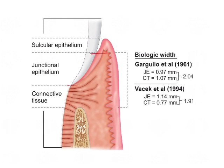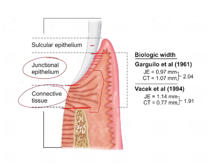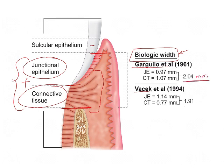From the coronal aspect down, there is some amount of epithelium in contact with the tooth, known as junctional epithelium. Below the junctional epithelium is the connective tissue, up to the alveolar crest. The total of junctional epithelium and connective tissue underneath is known as biologic width, given by Gargulo et al. and Vacek et al. The measurement of this junctional epithelium is 2.04 mm, or nearly 1.9 mm. What is the significance of biologic width?